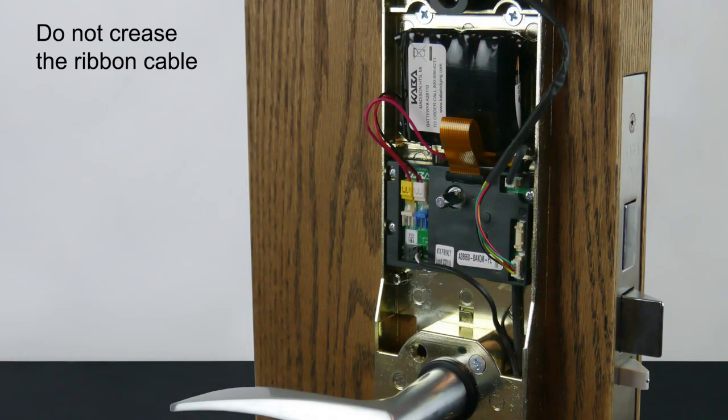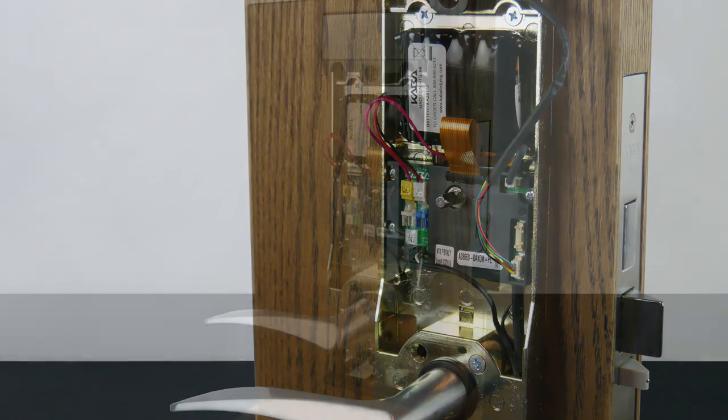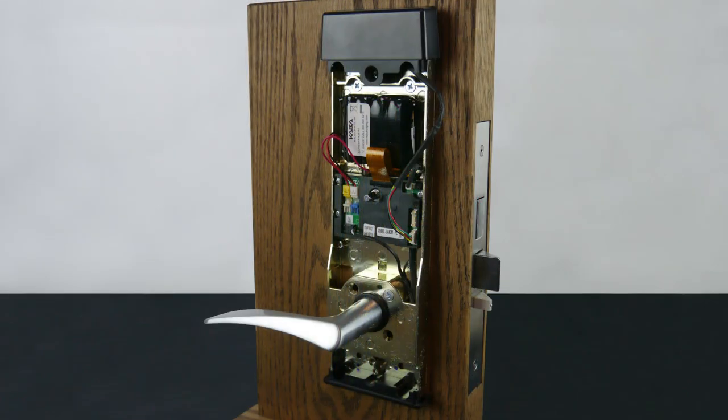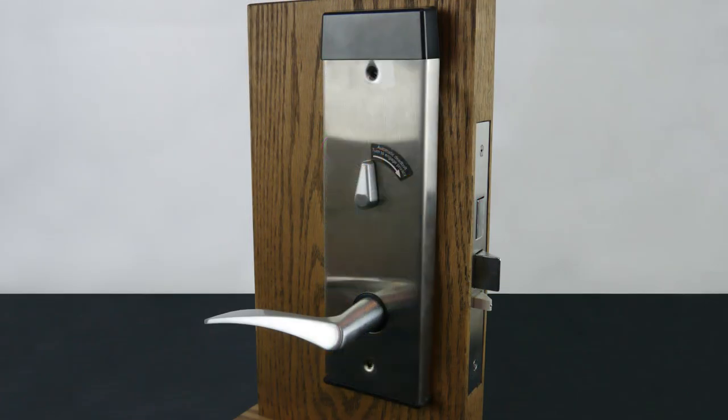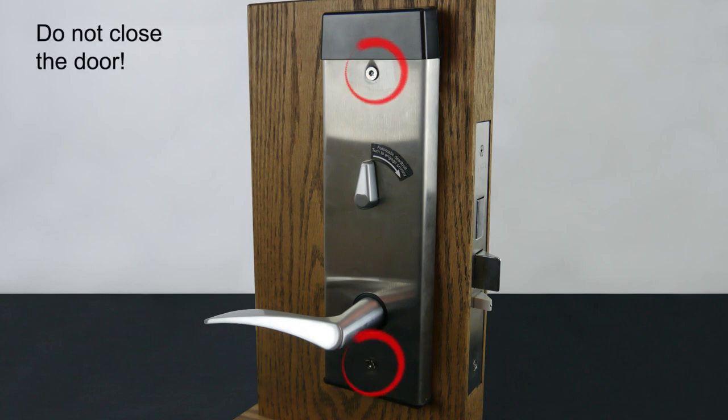Route the ribbon cable over the battery making sure not to crease it. Install the inside escutcheon with the thumb turn pointed upward. The final installation step is to secure the inside trim cover using the two Torx screws.